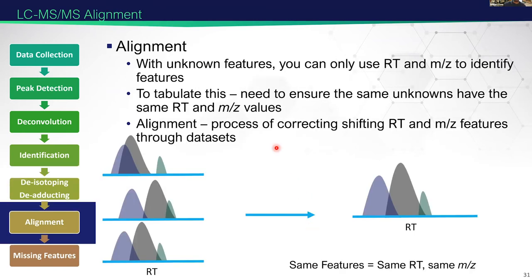Alignment is a common process when you want to tabulate all your unknown features and you only have retention time and mass-to-charge ratio as your unique identifiers. You want to make sure that your retention times for the same feature are actually the same across runs, so we might shift things around. Graphically, your three chromatographic traces might show the same three features eluting at slightly different times, and alignment gives you a single unified retention time and mass-to-charge ratio.